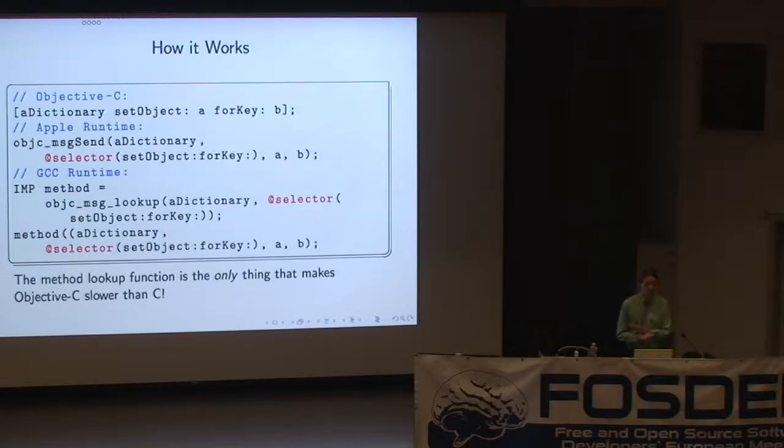The GNU runtime version does it as a two-step process. So the first call is to this Objective-C message lookup function, which returns a function pointer, and then you just have the compiler insert a call to that function just as it would insert a call to any other C function. So this is really the only thing that makes Objective-C slower than C, this one extra layer of indirection in message lookup.